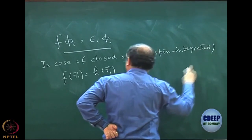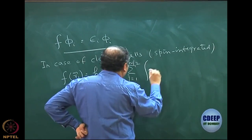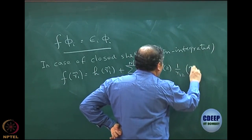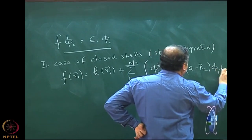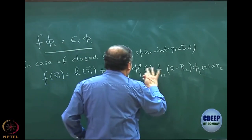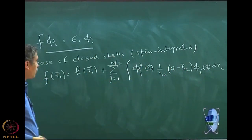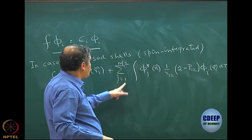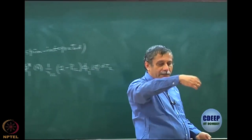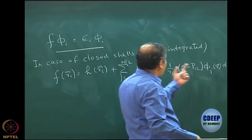The Fock operator is: h(r₁) plus sum over j from 1 to N/2 of the integral φ_j*(r₂) (1/r₁₂) φ_j(r₂) dτ₂, where r₁₂ = |r₁ − r₂|. The factor of 2 comes because the summation is only over N/2 spatial orbitals — the electron providing interaction can have either up or down spin for Coulomb, but only parallel spin for exchange, so there is only one exchange term.